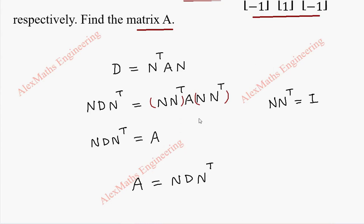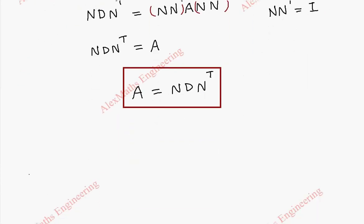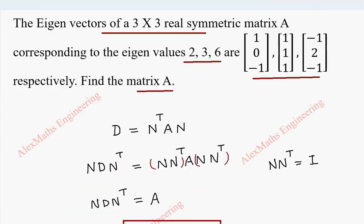Now, using the eigenvectors and eigenvalues, we are going to frame N, D, and N transpose. First, N, which is a normalized matrix, is obtained from the eigenvectors. We take the first eigenvector and its magnitude is root 2 — that is root of 1 squared plus minus 1 squared, totally root 2. The second magnitude is root of 1 squared plus 1 squared plus 1 squared, which is root 3. And the third magnitude is root of 1 plus 4 plus 1, which is root 6.